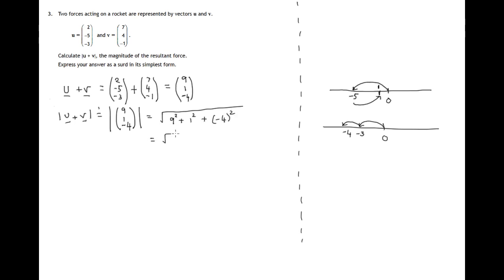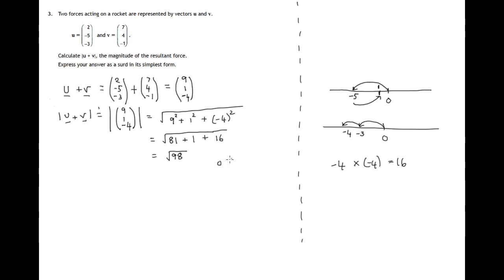9 squared is 9 times 9, which is 81. 1 squared is 1 times 1, which is 1. And negative 4 squared: negative 4 times negative 4 is positive 16. So we have the square root of 81 plus 1 plus 16, which is the square root of 98.